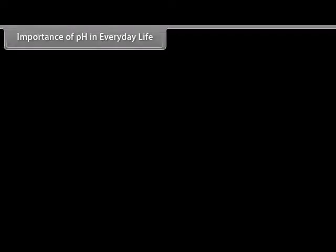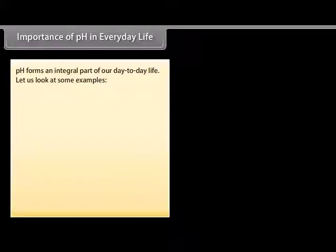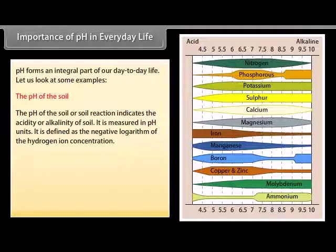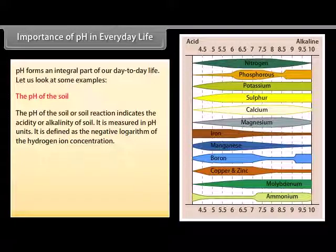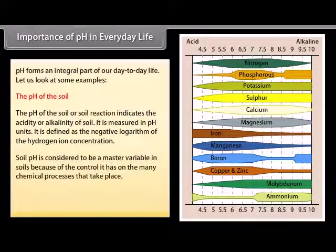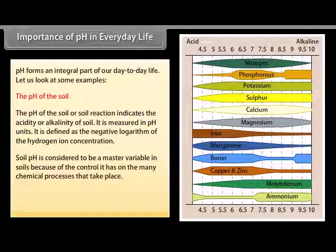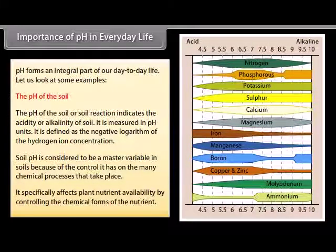Let us look at some examples from our day-to-day life where pH forms an integral part. The pH of the soil indicates the acidity or alkalinity of soil, measured in pH units, and is defined as the negative logarithm of the hydrogen ion concentration. With an increase in the amount of hydrogen ions in the soil, the soil pH also increases, leading to being more acidic. Soil pH is considered to be a master variable in soils because of the control it has over many chemical processes that take place.